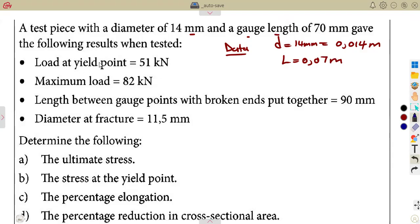The load at yield point, maximum load, which is the ultimate one. Remember maximum, you're talking of what? Ultimate. The load that was given, the length between the gauge points with broken ends put together, 90 millimeters, which means we're talking of the final length. So there is the length that you started with, which you can refer as the original, and there is the length that you're ending with, which you can call the final length.